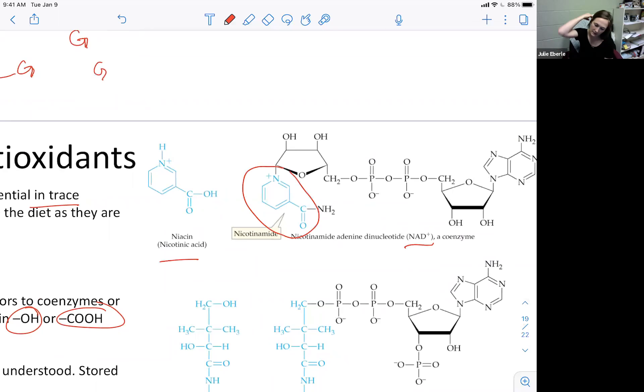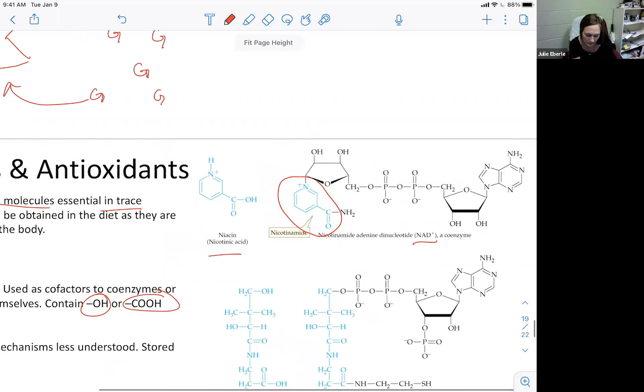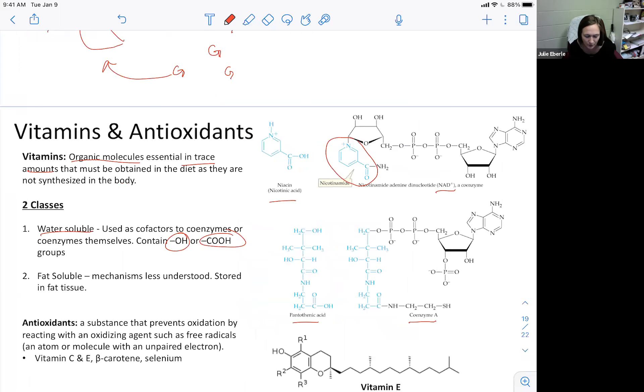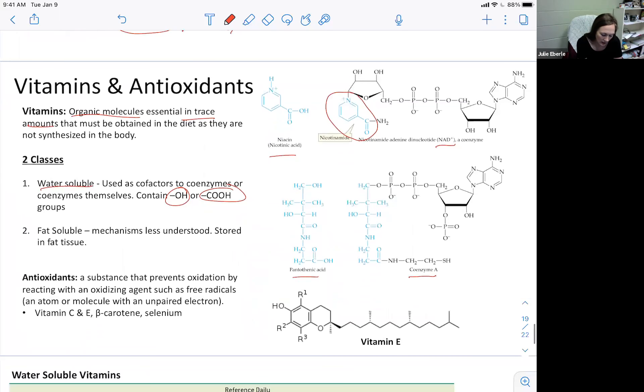Another example: pantothenic acid is a cofactor to the coenzyme called coenzyme A, or we'll call it CoA tomorrow or next week. That's examples of how the cofactor and coenzyme fit together and then they go perform their functions. Some vitamins also act as antioxidants. Fat-soluble vitamins - we don't understand the mechanisms of how they work, but we do know a lot about their significance. They're stored in fat tissue.